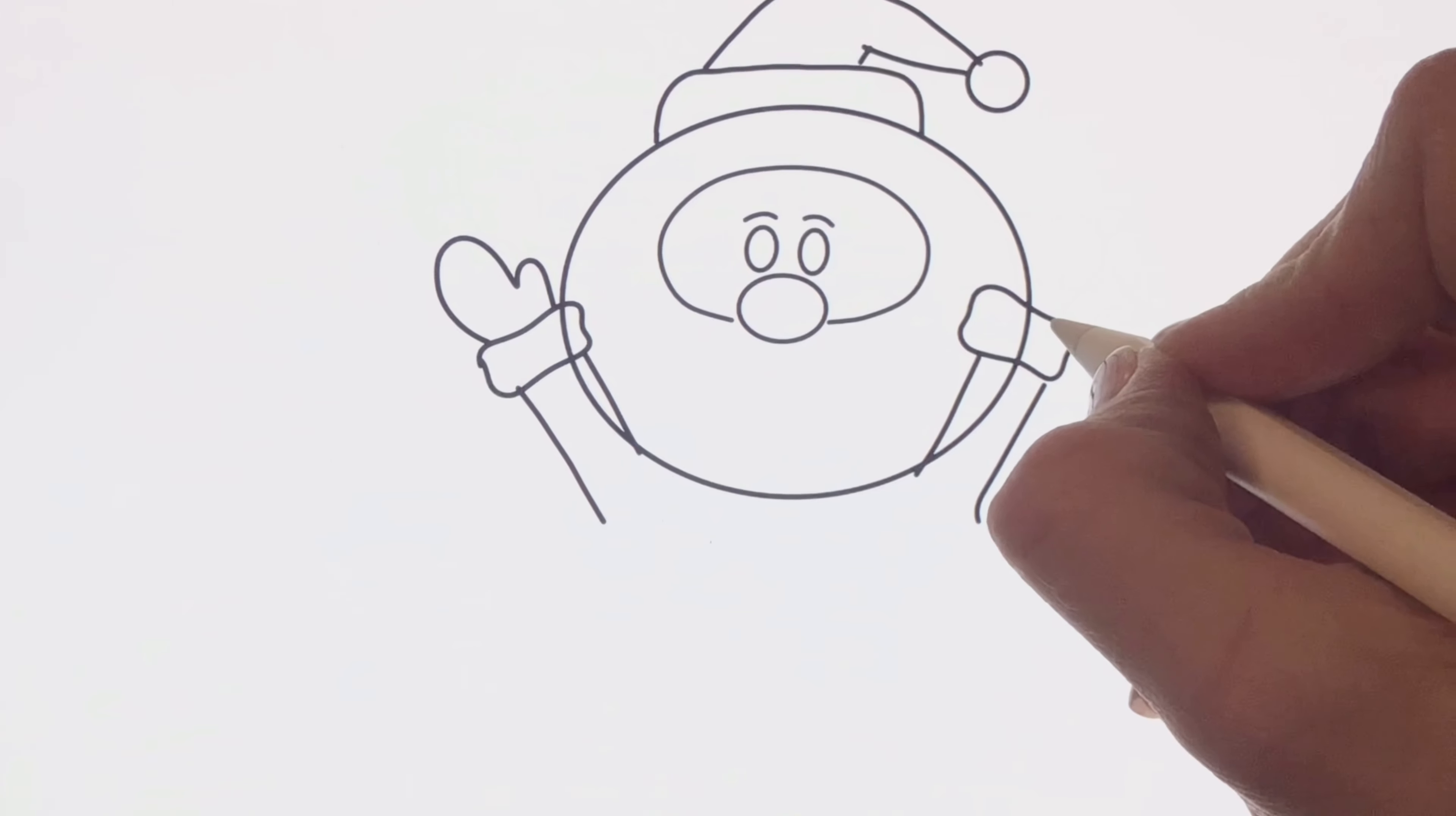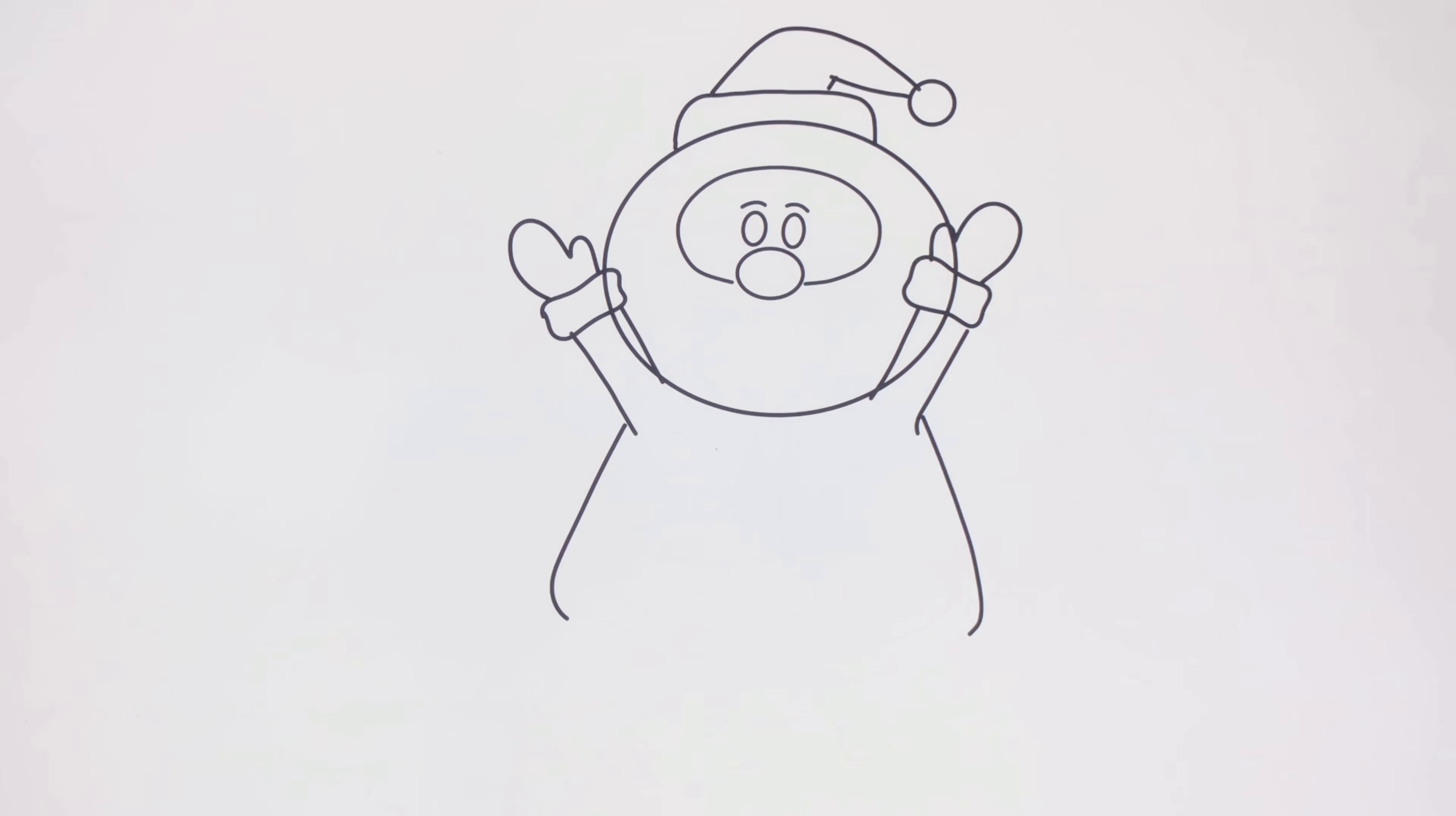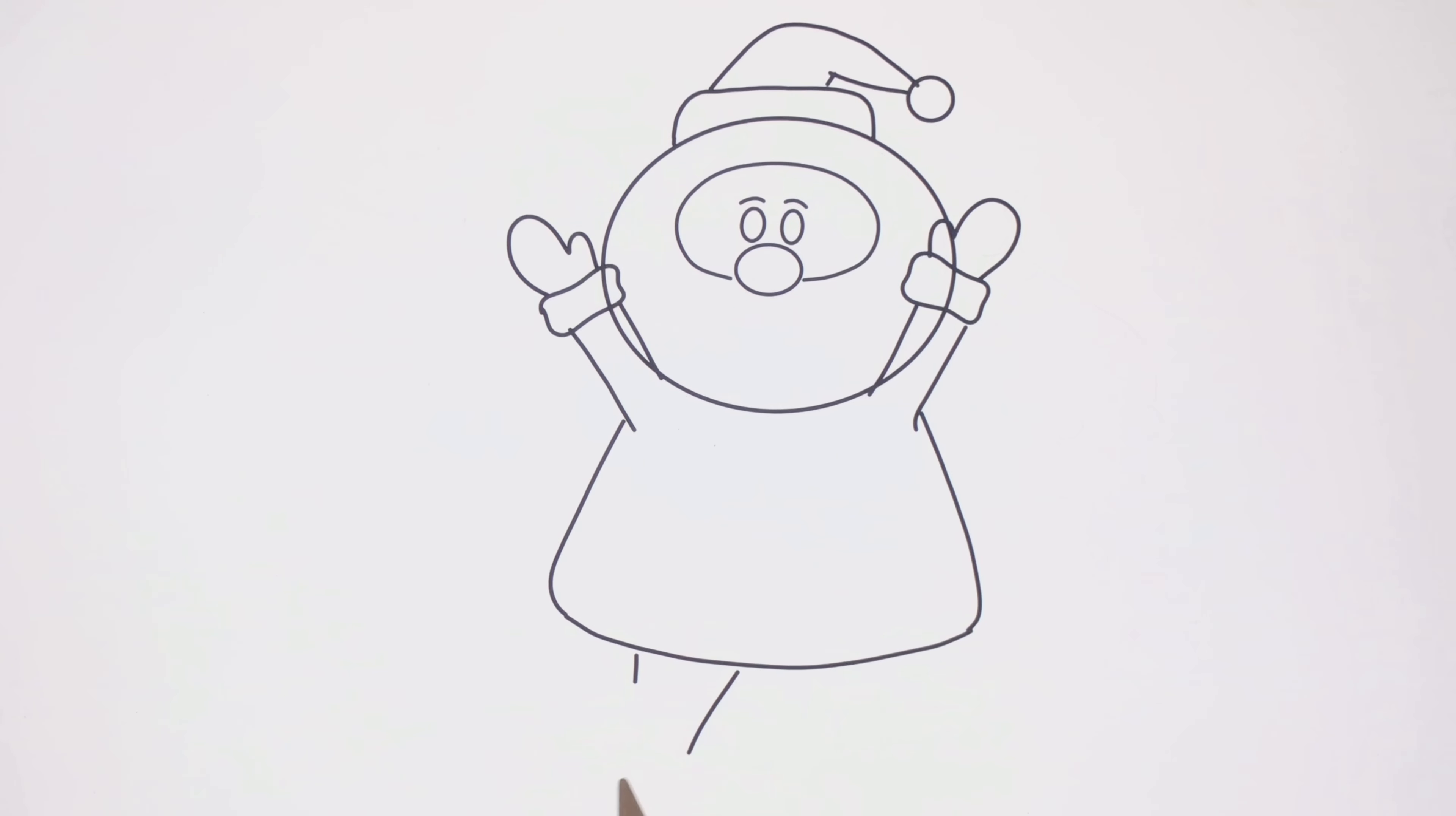Draw mittens - Santa's gonna need them or he'll freeze. Now we are drawing the rest of the jacket - two lines going down and connect them with each other. Let's draw shoes - one small line, a longer line, and a half circle on top.